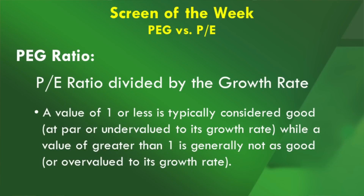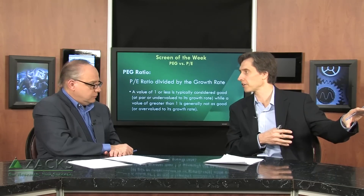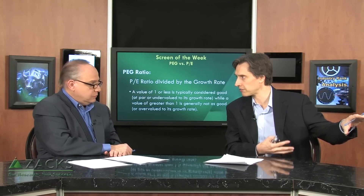At the time of this recording, the S&P's P/E ratio using F1 estimates was at 15.33. Now let's look at the PEG. PEG ratio is simply the P/E ratio divided by the growth rate. Conventional wisdom says a value of 1 or less is considered good, which means it's at par or undervalued relative to its growth rate, while a value greater than 1 is not as good, meaning it's overvalued to its growth rate. A lot of people believe that the PEG ratio tells a more complete story than the P/E ratio because you're comparing it to its growth rate, and I agree.